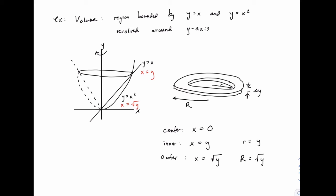And I'll pause here and mention that, just like in the last example, if we revolved around a different vertical line, like say we revolved around x equals negative three, in that case, this would be negative three, and then the inner radius would be y minus negative three, or y plus three, and the outer radius would be y minus negative three as well, or the square root of y plus three.